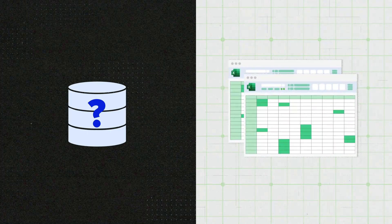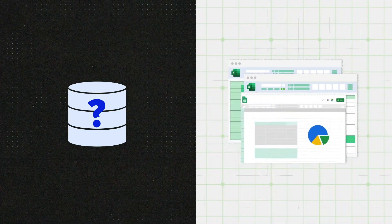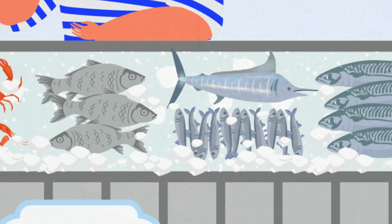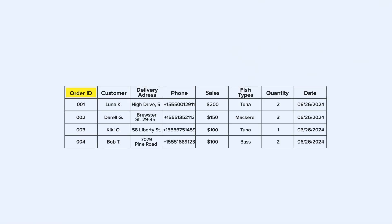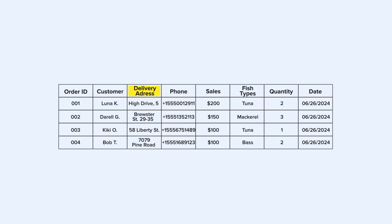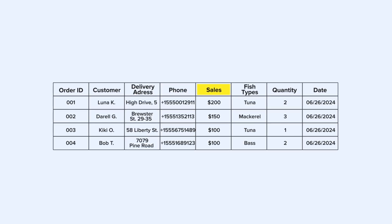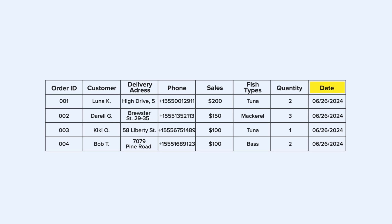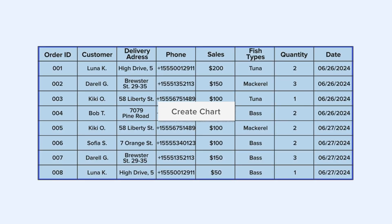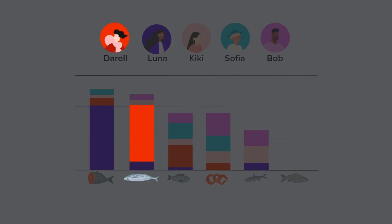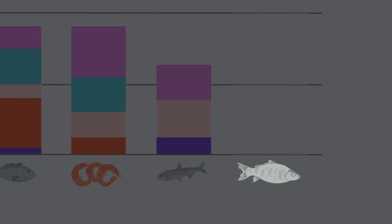Spreadsheets — the ultimate medium for all your business data. Why do you need a database when good old Excel, or if you're adventurous and bold, Google Sheets do the job? Say you run a small fish market. You record each purchase with a unique ID, writing the buyer's name, delivery address, phone number, sales amount, type of fish, the quantity, and the date of purchase. You use it to contact your buyers, dispatch delivery, and track sales. You can even run some analytics: Daryl likes mackerel, Luna loves tuna, and nobody buys carp.